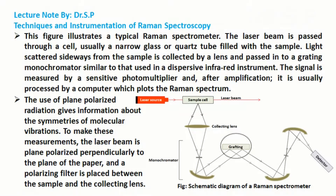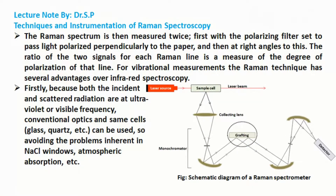The use of plane-polarized radiation gives information about the symmetries of molecular vibrations. To make these measurements, the laser beam is plane-polarized perpendicularly to the plane of the paper, and a polarizing filter is placed between the sample and the collecting lens. The Raman spectrum is then measured twice: first with the polarizing filter set to pass light polarized perpendicularly to the paper, and then at right angles to this. The ratio of the two signals for each Raman line is a measure of the degree of polarization of that line.